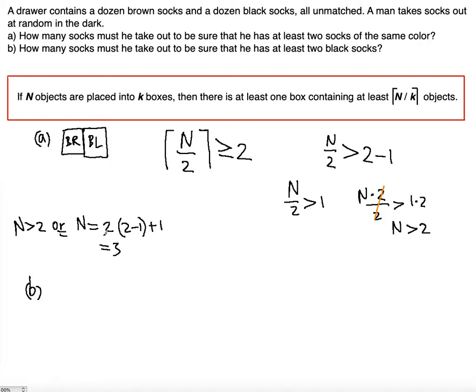Now for the second part, for part B, we're not going to use this generalized pigeonhole principle because this question is asking you specifically for at least two black socks being picked out, not just the same color. In this case, you just have to think of the worst case scenario of the odds working against you picking the two black socks. To be sure is the key word here.